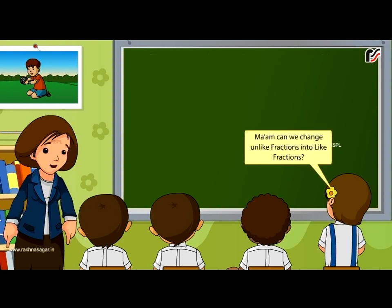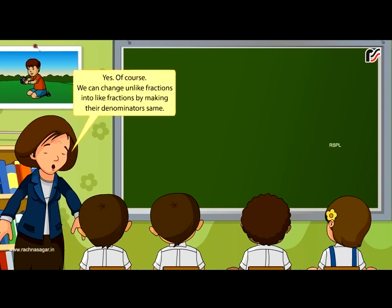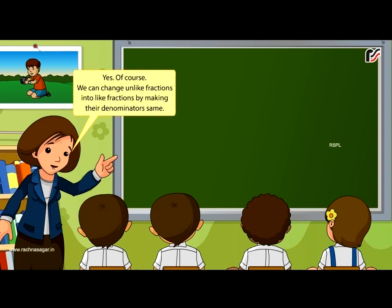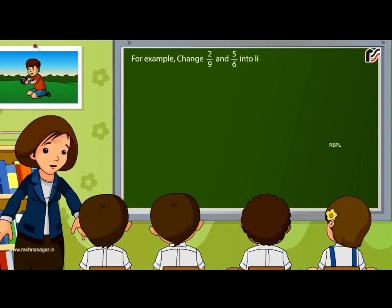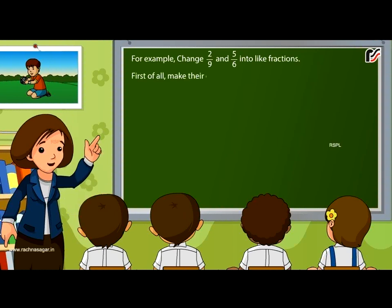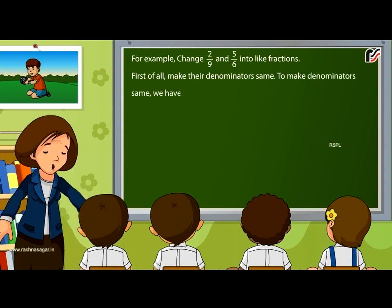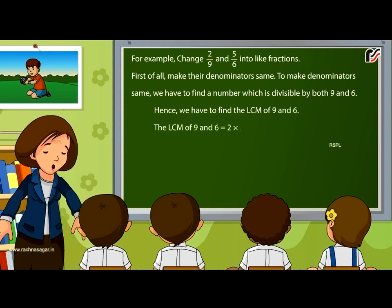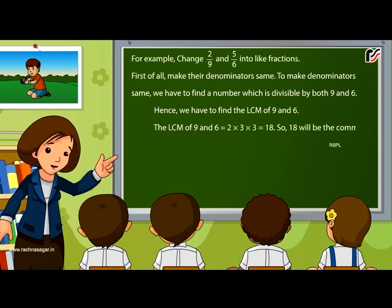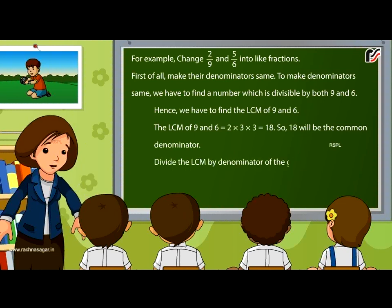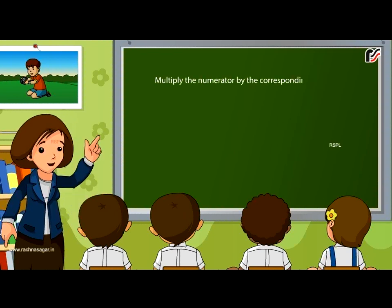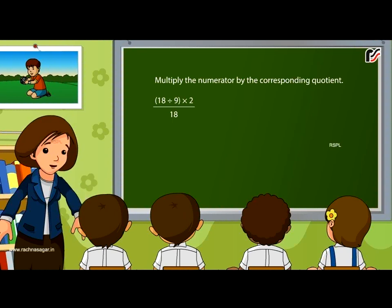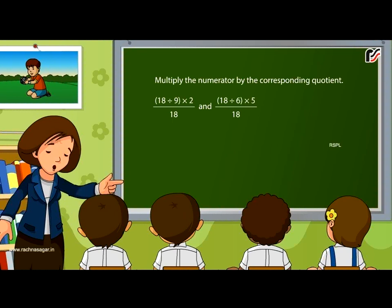We can change unlike fractions into like fractions by making their denominators the same. For example, change 2 by 9 and 5 by 6 into like fractions. First, find the LCM of 9 and 6. The LCM of 9 and 6 is equal to 2 into 3 into 3, which equals 18. So 18 will be the common denominator. Divide the LCM by the denominator of the given fraction and multiply the numerator by the corresponding quotient: 18 divided by 9 multiplied by 2, divided by 18, and 18 divided by 6 multiplied by 5, divided by 18, gives 4 by 18 and 15 by 18.